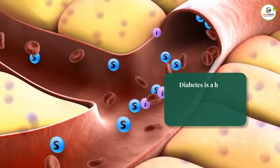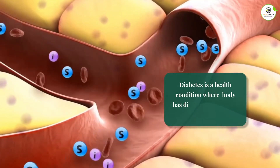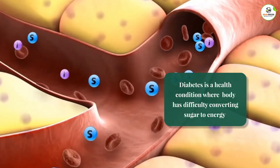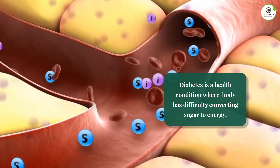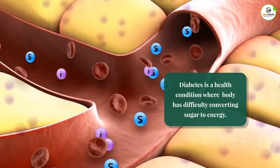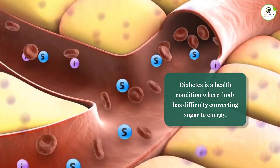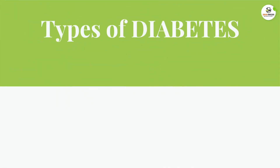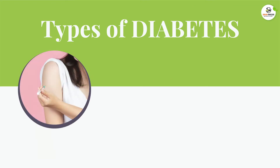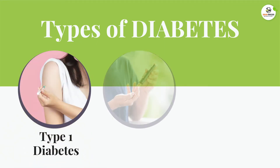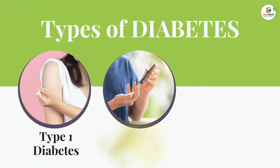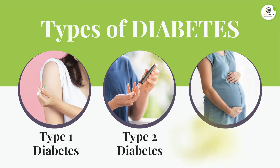Diabetes refers to a health condition where your body has difficulty converting sugar to energy. Typically, we think of three kinds of diabetes: Type 1 diabetes, Type 2 diabetes, and gestational diabetes.